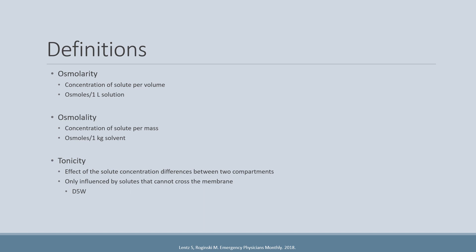Tonicity is only influenced by solutes that cannot cross the membrane. For example, dextrose 5% water, or D5W, is an isoosmolar solution, but when infused, the sugar is actually able to pass into the cells, and the remaining water in the extracellular space becomes a hypotonic solution.